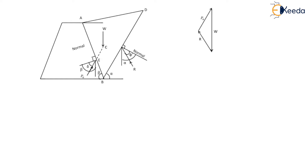One important thing to note is that Coulomb's wedge theory does not give the exact point of application for the active earth pressure. We assume this point can be obtained by taking a line parallel to the failure wedge from point C, where C is the centroid of the failure wedge. This parallel line intersects the back of the retaining wall at point E, and that point E is considered the point of application of the active earth pressure.